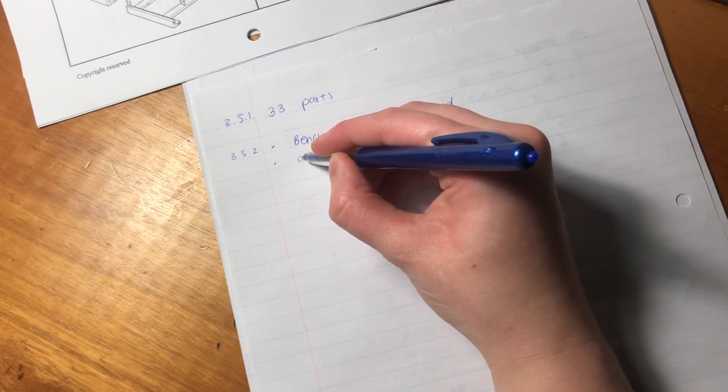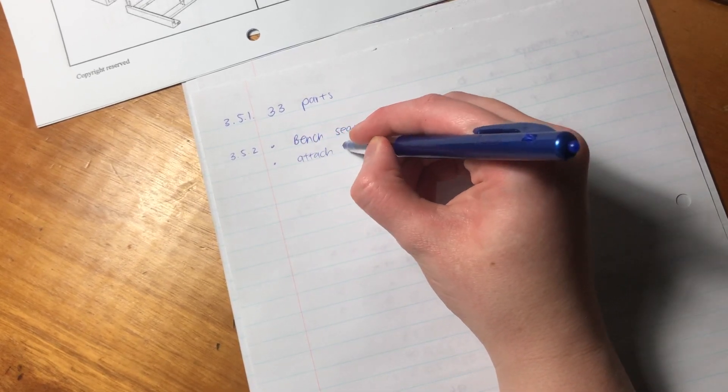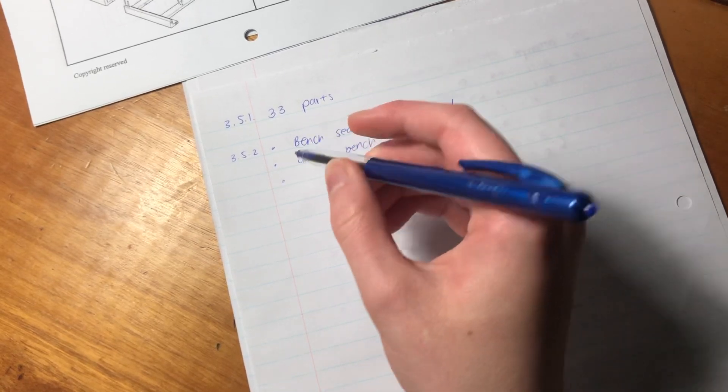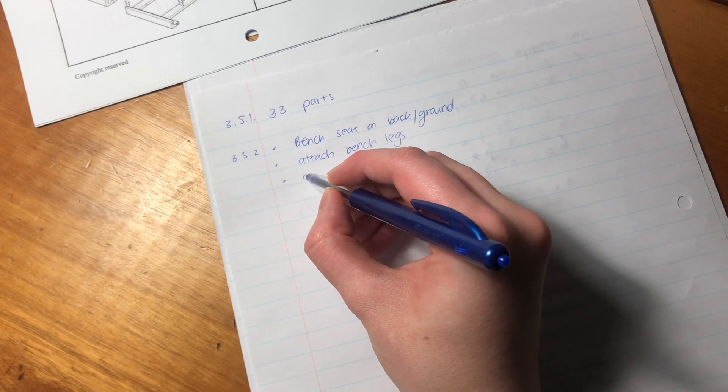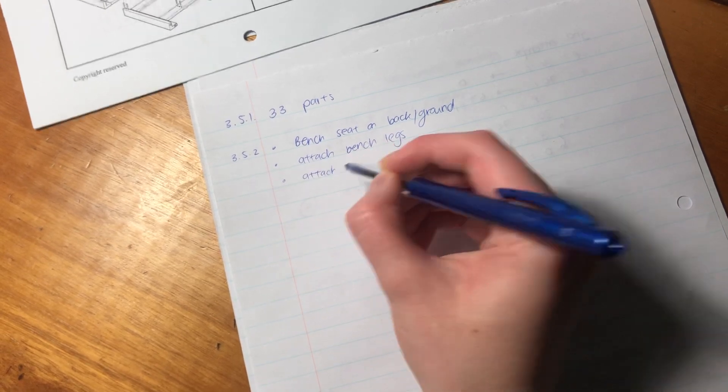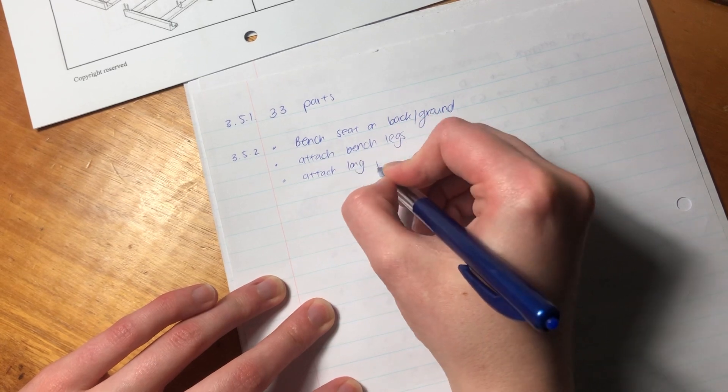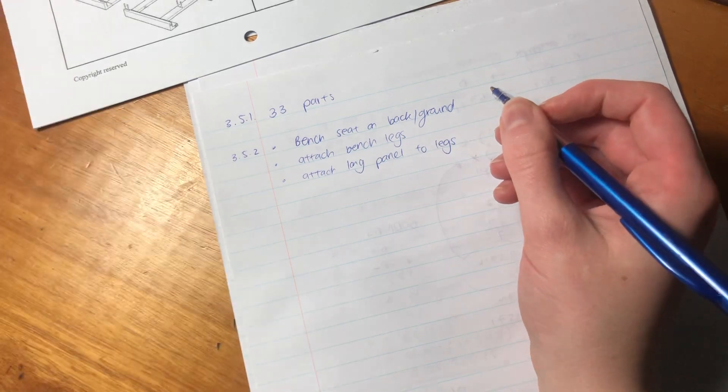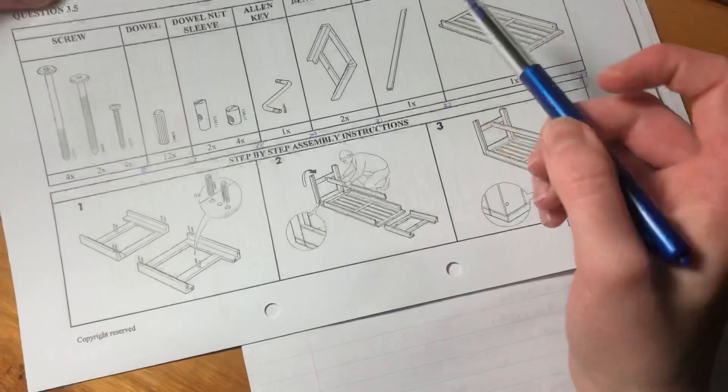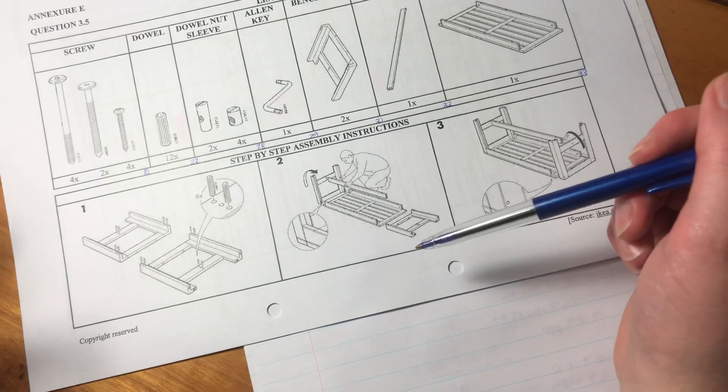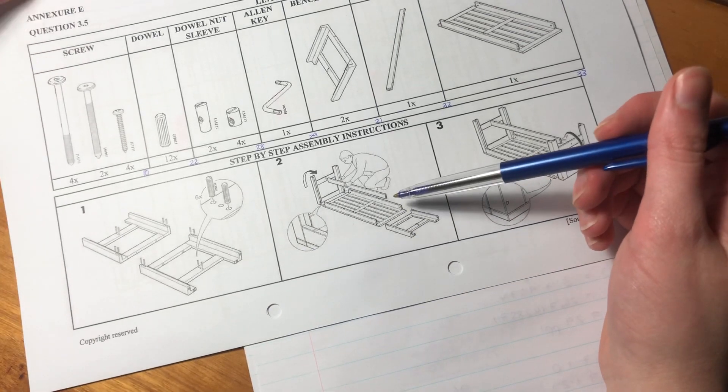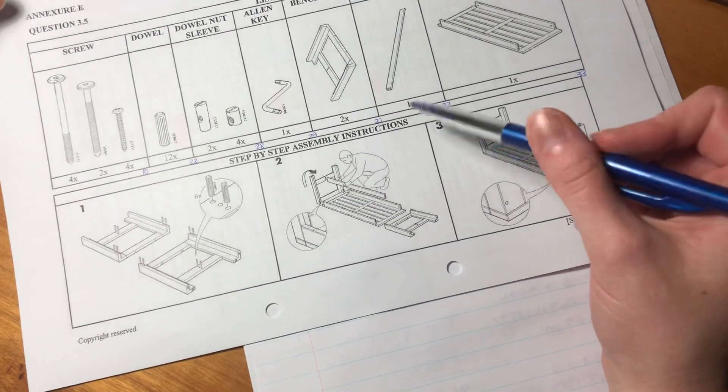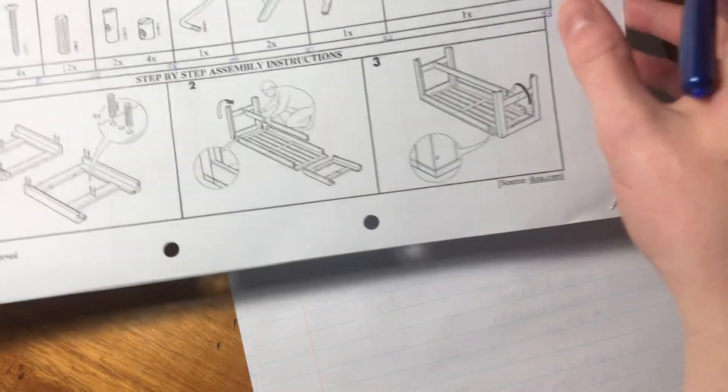Then I'm going to say attach bench legs. Then I'm going to say attach long panel to legs. So basically, I'm describing, right? They asked me to describe what's in this picture, and that's what I'm seeing. So that question is not too difficult, but it's actually testing whether you can put into words what you're seeing. And sometimes that can be a little bit tricky, but that's the way I would go about it.